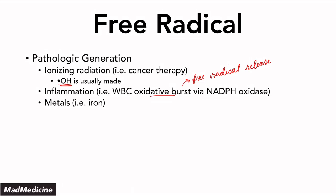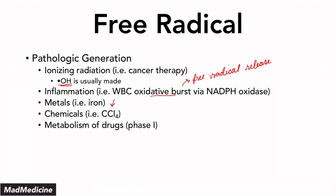Metals can also cause free radicals to form, especially iron — that's why iron is bound to a carrier protein. Same with copper. Chemicals can cause free radicals; one of the classic chemicals is carbon tetrachloride, which we'll talk about in a second. The metabolism of drugs, especially phase one metabolism, forms free radicals, as well as redox reactions.